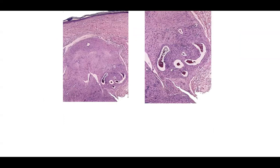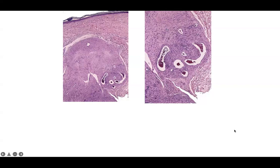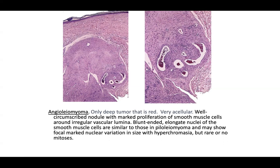We were just discussing nodules without epidermal involvement. You might get a slide without any epidermis, so recognize the pattern. Note the prominent vasculature and well-circumscribed nature of this neoplasm. If you had to guess the cell type, you'd probably say muscle. This is an angioleiomyoma — sometimes called the only deep tumor that is red — though it can be surprisingly acellular, looking eosinophilic with few cells.